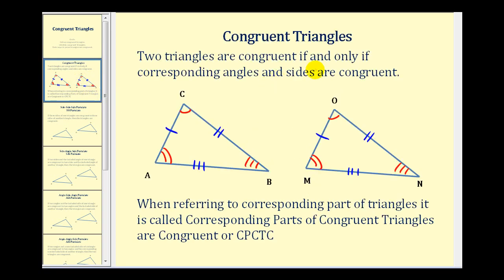Two triangles are congruent if and only if corresponding angles and corresponding sides are congruent, as we see marked here. These two triangles are congruent because corresponding sides and angles are congruent. When we identify congruent triangles, it is important to know where the corresponding angles and sides are.